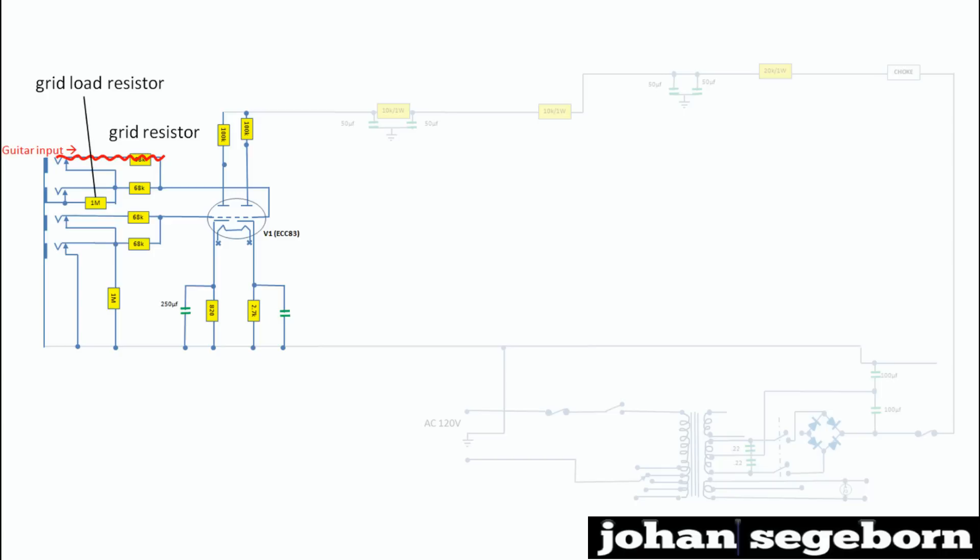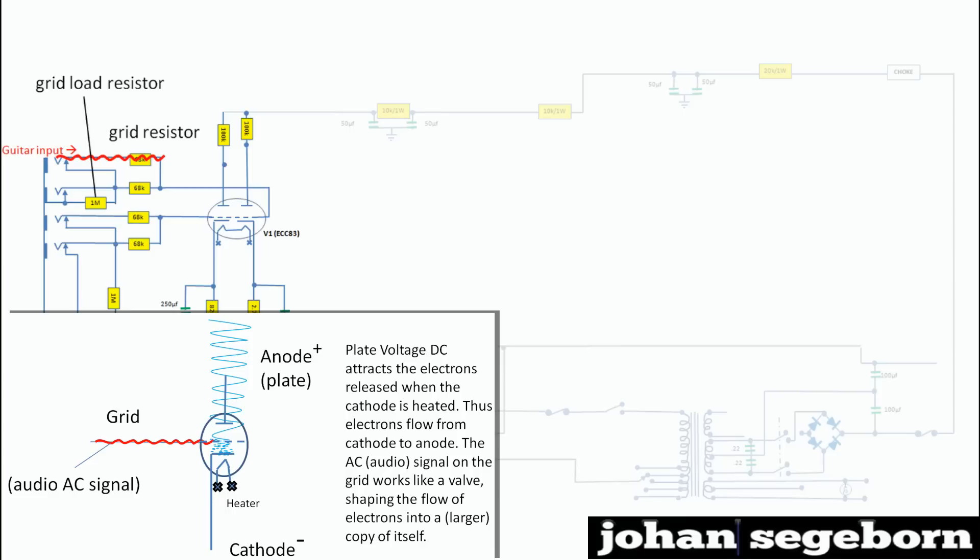Before we come to the first pre-amp tube of the circuit, we should probably discuss how a tube works. A tube consists of a number of parts: an anode, a cathode, a heater, and a grid, basically.